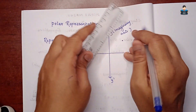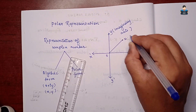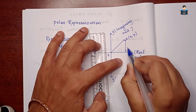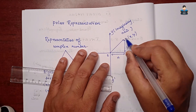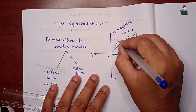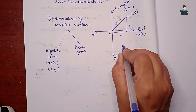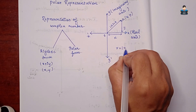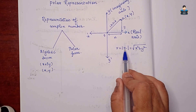Consider some point on the plane and join it to the origin. For a complex number (x, y), the distance OZ is modulus of Z. In the polar form, r is the distance between the origin and the point, so r equals modulus of Z, which equals square root of x squared plus y squared.